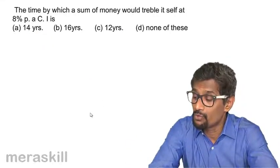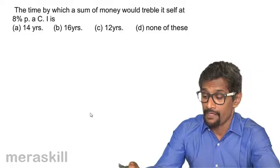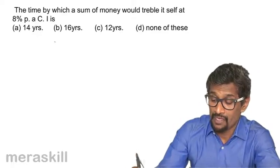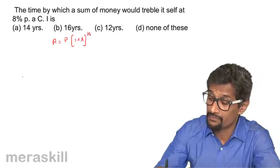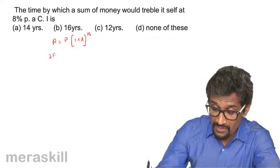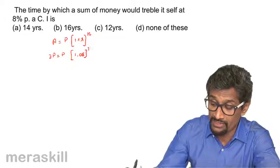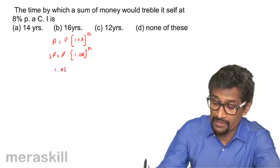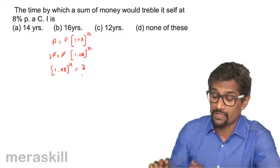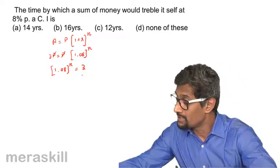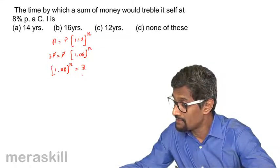The time by which a sum of money would treble itself at 8% per annum compound interest. So we have A equals P into 1 plus R raised to N. A equals 3P, rate is 8% per annum, so 0.08, giving 1.08 raised to N. So we have 1.08 raised to N equals 3. Using the calculator, multiply 1.08 by itself to find N — when multiplied 14 times you get 2.937.